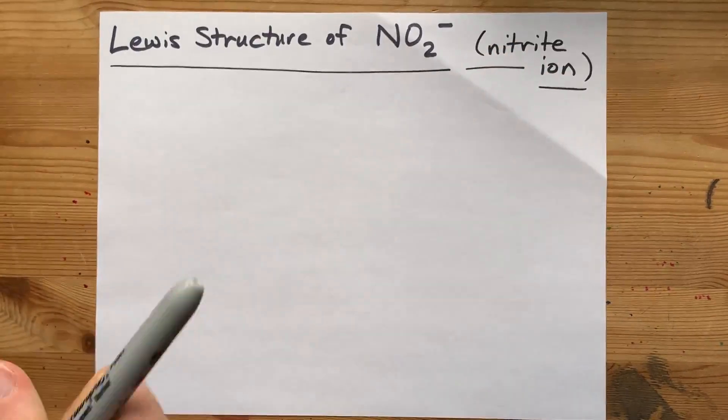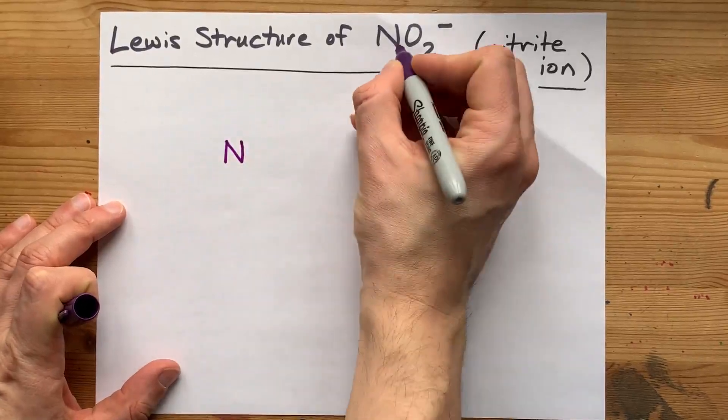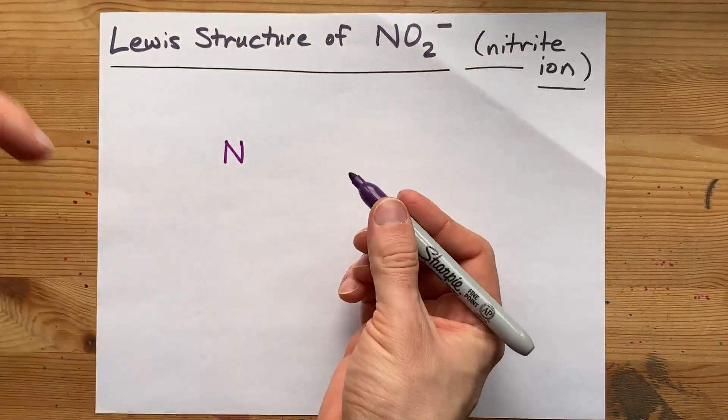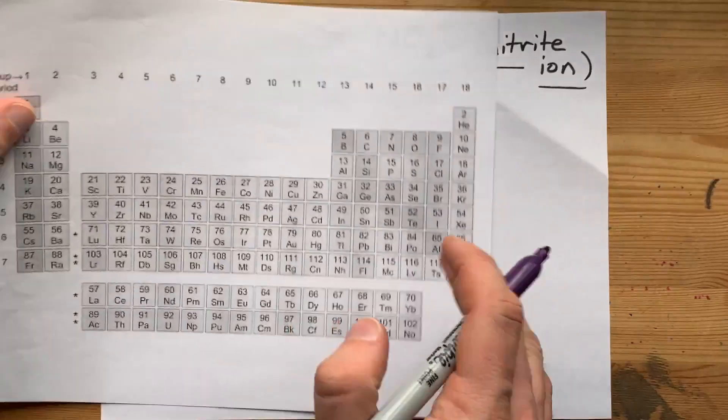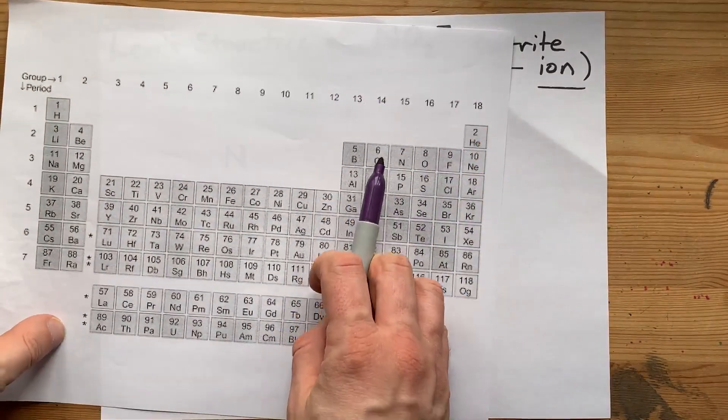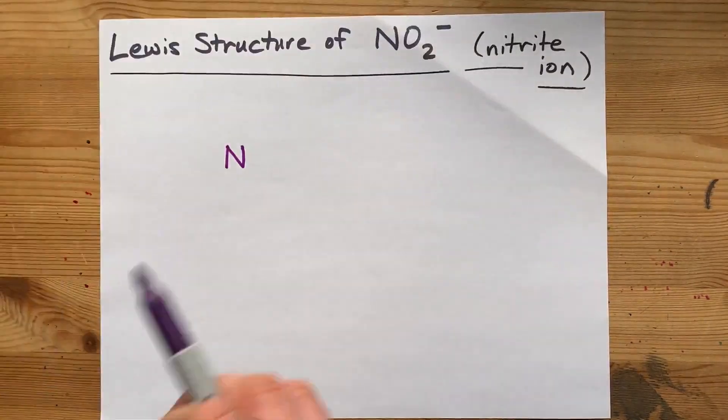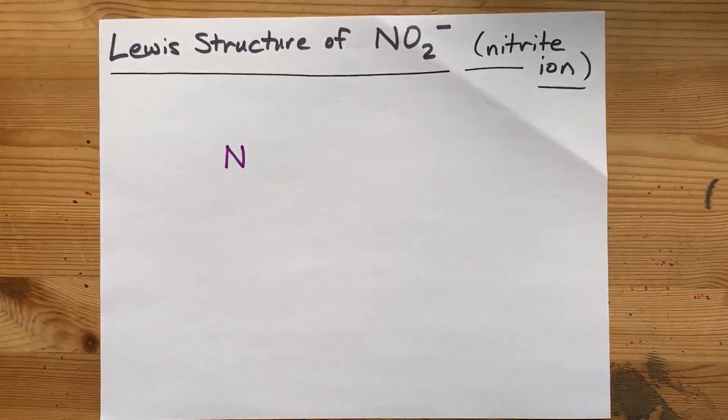First of all, nitrogen is the element of these that can hold the most bonds. My personal rule of thumb is that the closer to carbon an atom is, the more likely it is to be the central atom.